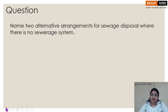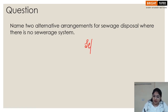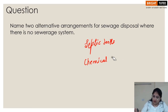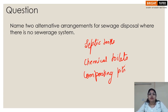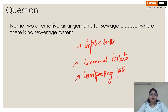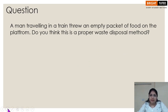Name two alternative arrangements for sewage disposal where there is no sewage system. Where there is no sewage system, there are alternative options: septic tanks, chemical toilets, and composting pits. These are the arrangements through which human excreta or sewage can be managed where there are no conventional ways of disposal.